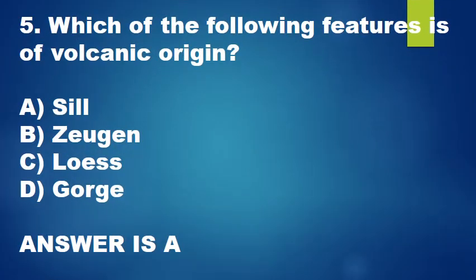Question 5: Which of the following features is of volcanic origin? A. Sill, B. Zeugen, C. Loess, D. Gorge. The answer is A.